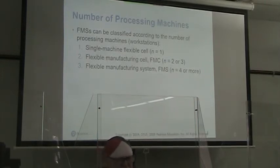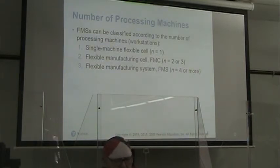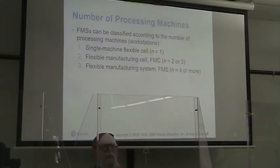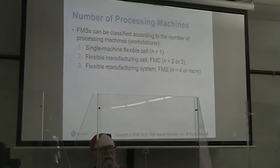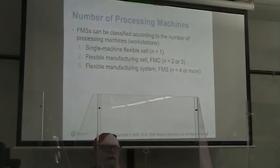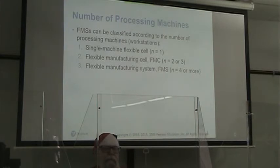Our flexible manufacturing systems can be classified according to the number of processing machines or workstations. A single machine flexible cell, we say n is equal to 1. A flexible manufacturing cell, we say n is equal to 2 or 3. And a flexible manufacturing system or FMS, n is equal to 4 or more. The dividing line between a manufacturing cell and a flexible manufacturing system — I'm a little dubious — but we're going to go with it for the moment.